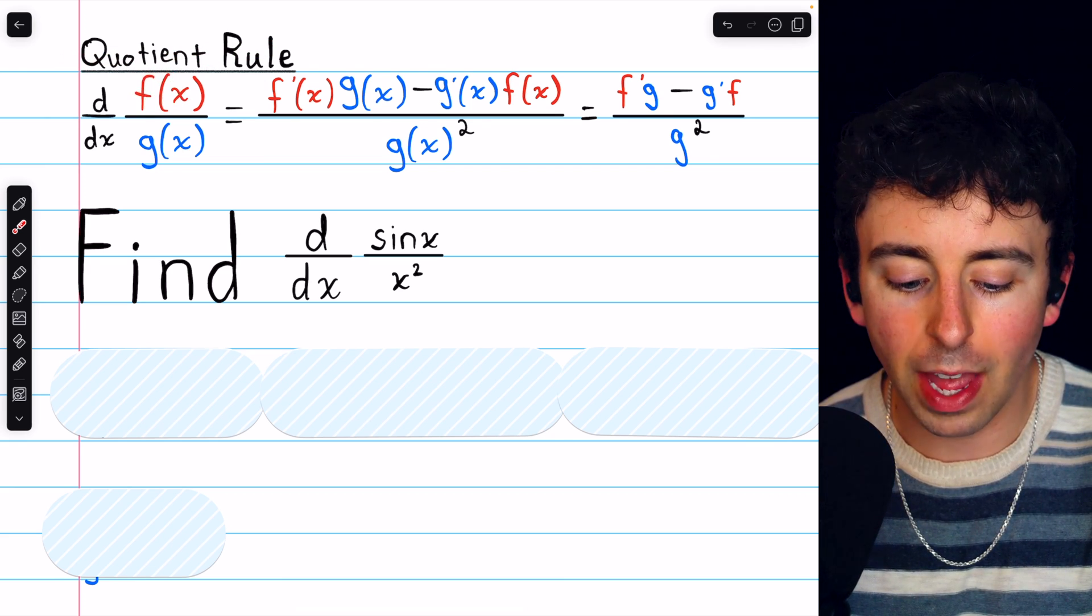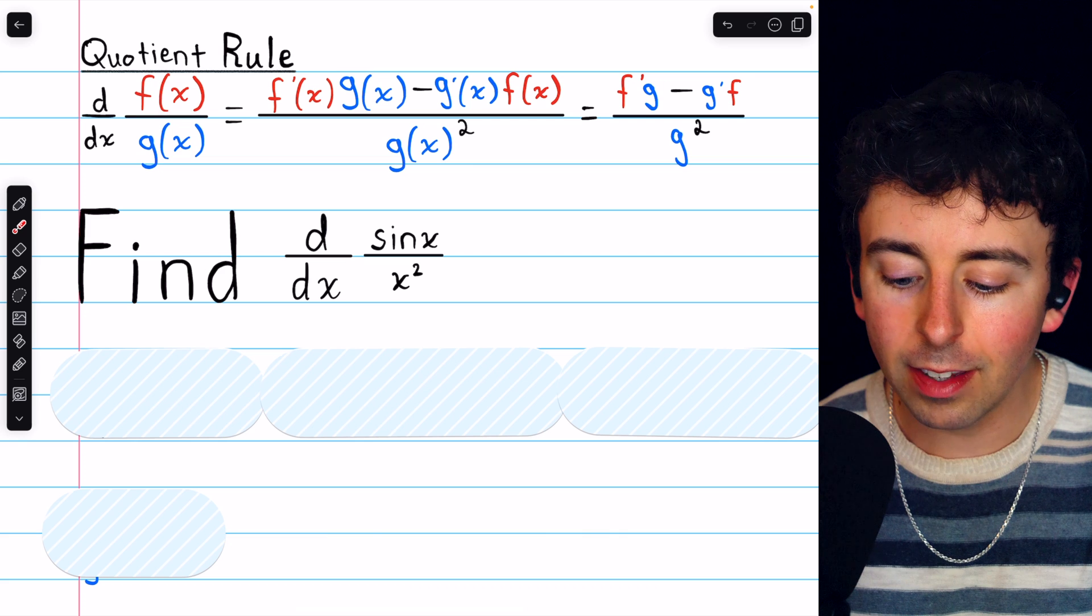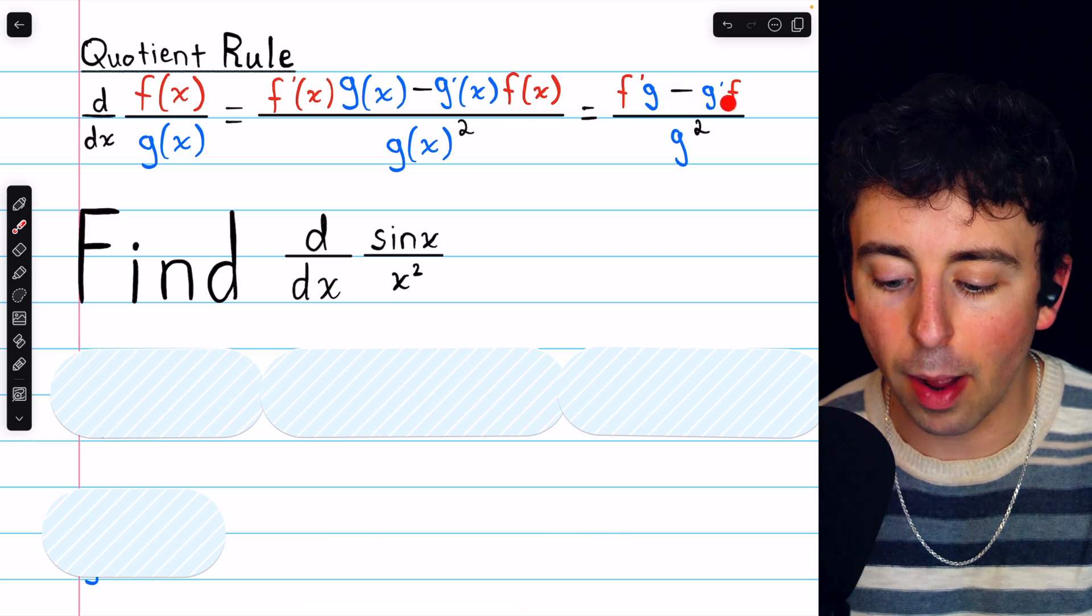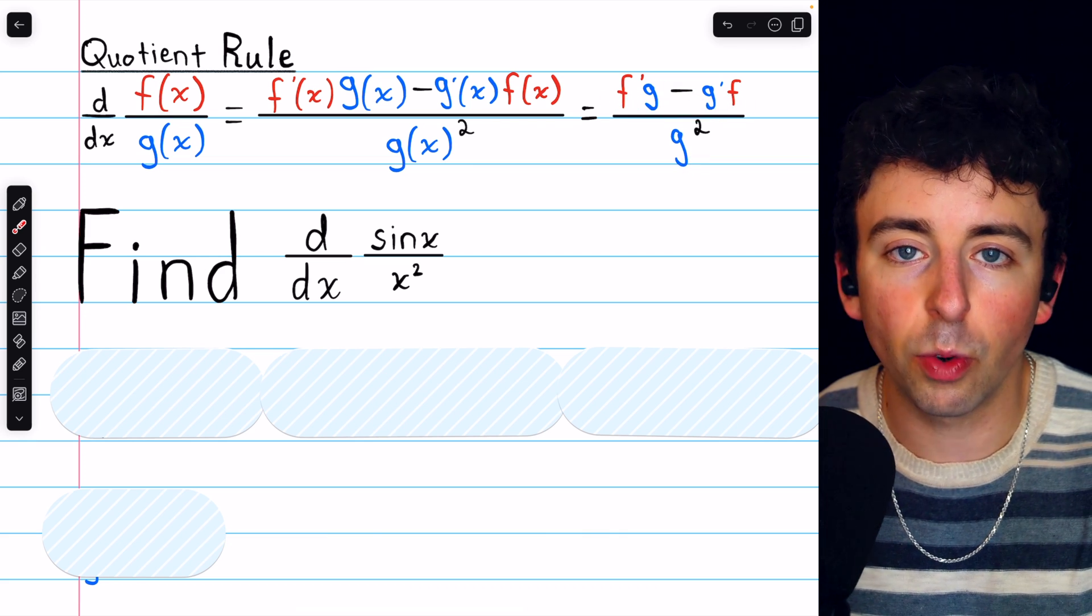The quotient rule tells us the derivative of f divided by g is f'g minus g'f all over g squared.